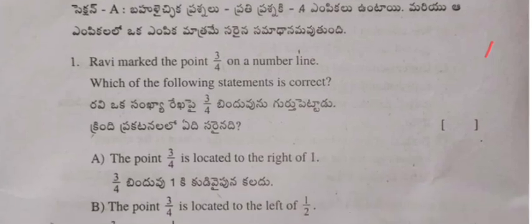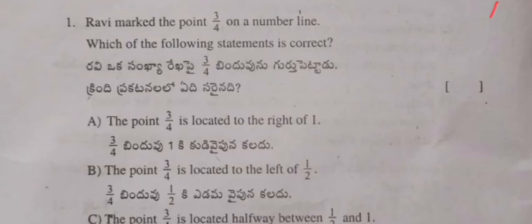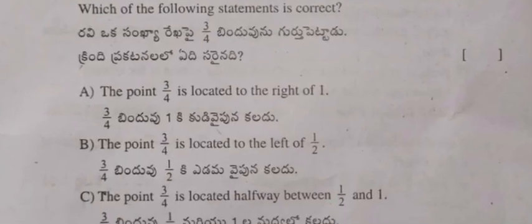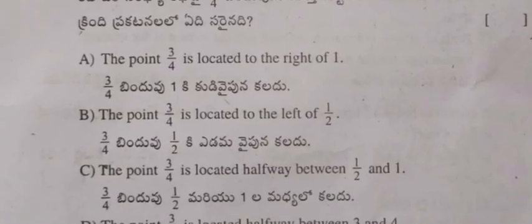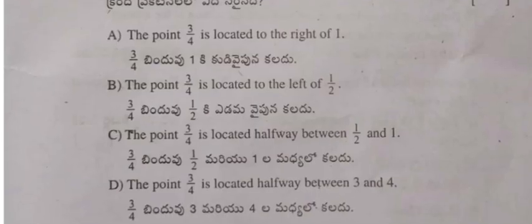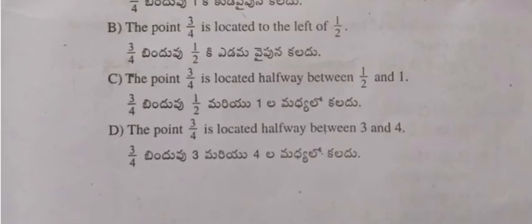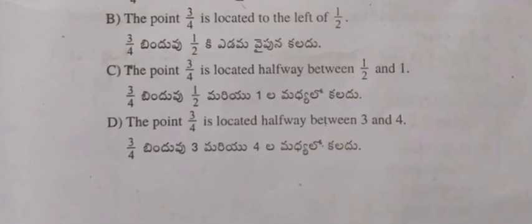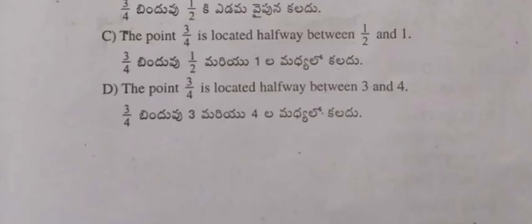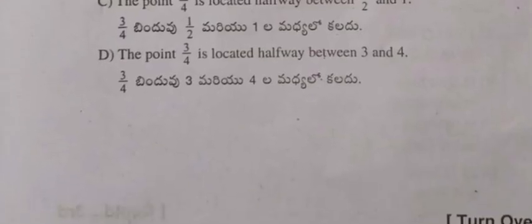Question 1: Ravi marked the point 3/4 on a number line. Which of the following statements is correct? (A) The point 3/4 is located to the right of 1. (B) The point 3/4 is located to the left of 1/2. (C) The point 3/4 is located halfway between 1/2 and 1. (D) The point 3/4 is located halfway between 3 and 4.